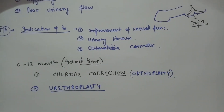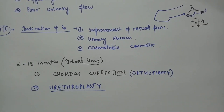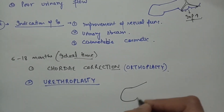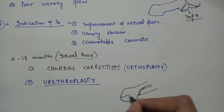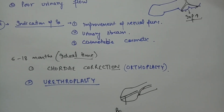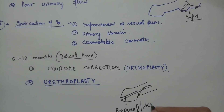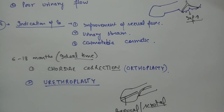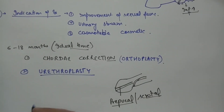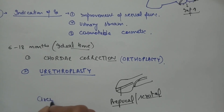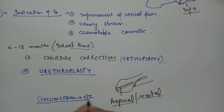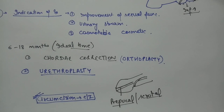In urethroplasty, we reconstruct the distal urethra using prepucial skin or scrotal skin regardless of where the opening is. That is why circumcision is contraindicated in hypospadias patients, as the prepucial skin is needed for the reconstruction.